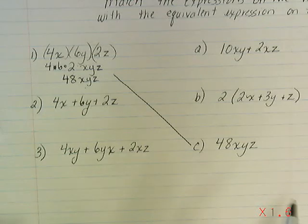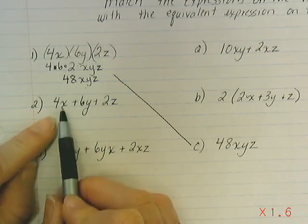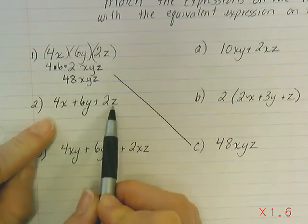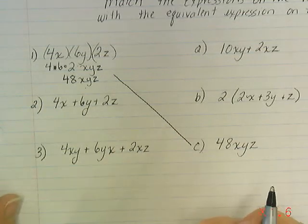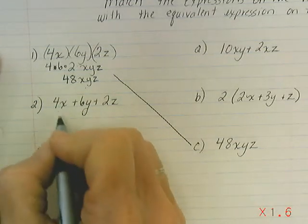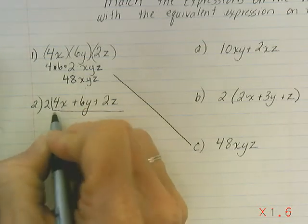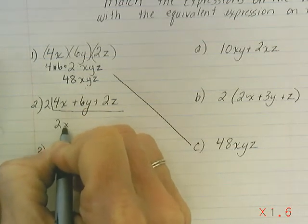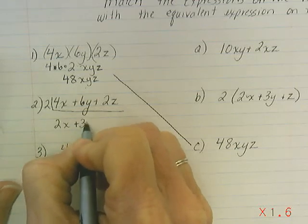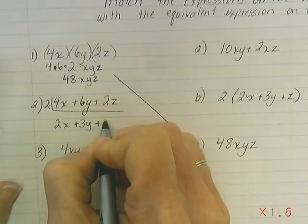For number two, 4x plus 6y plus 2z, none of these are like terms. I have an x, a y, and a z. But I can factor out a 2. So I'm going to factor this by dividing by 2, and that means we have 2x plus 3y plus z.